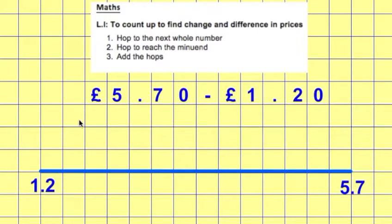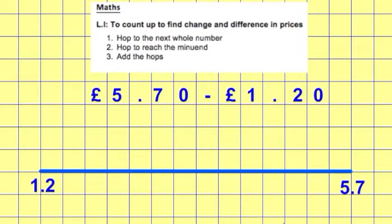To model this today, I've taken an equation from sheet 1, but I've changed the context slightly. Instead of just 5.7 minus 1.2, I've changed this to the money context by putting the pound sign in front of the decimals and popping a zero in the hundredths column. So I've changed these amounts to £5.70 minus £1.20. I've drawn my number line at the bottom, which I've removed from your steps because you should be doing this automatically now, and I'm going to model making those hops to find the difference.